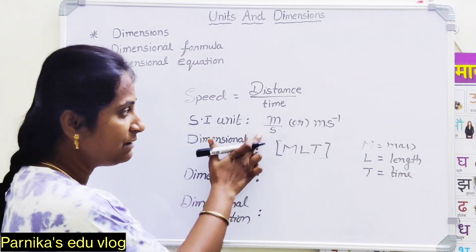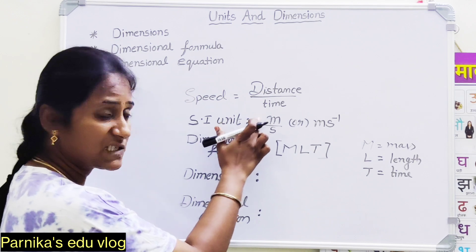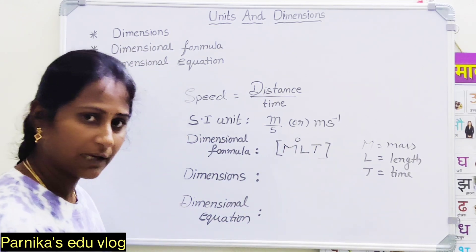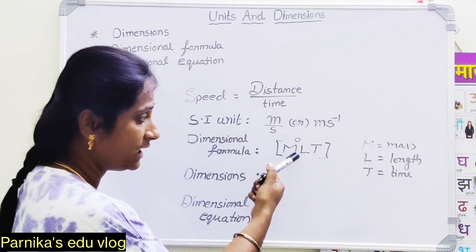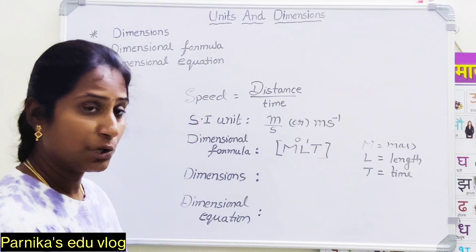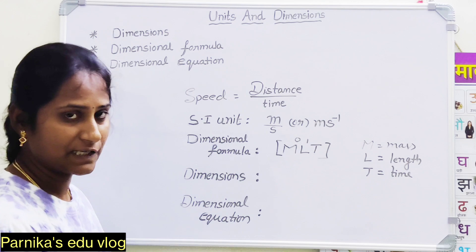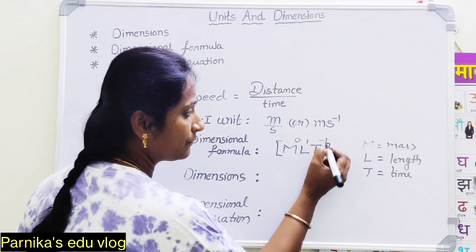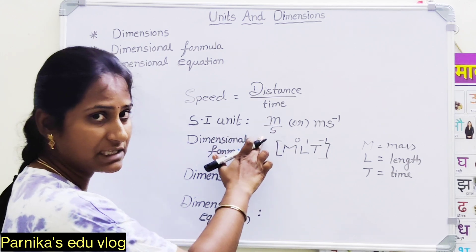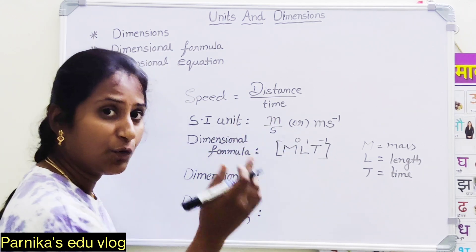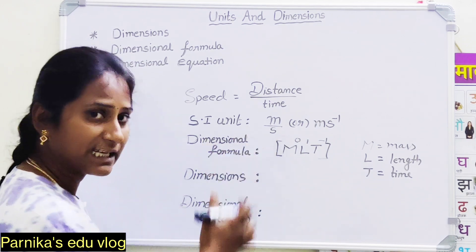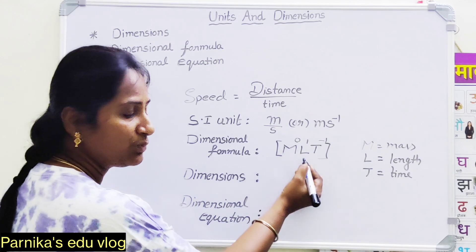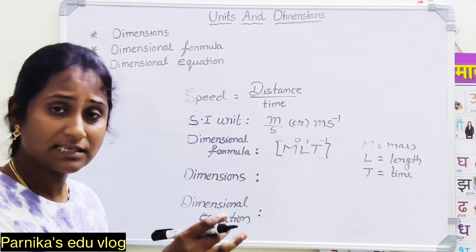First write [M L T]. Is there any mass? Mass has the unit kg. There is no kg in the unit of speed, so M has power zero. Is length there? Yes — the unit meter is there, so L has power one. Is time there? Yes — second is the SI unit of time, and it is in the denominator. When it comes to the numerator, it becomes minus one. So we have M⁰ L¹ T⁻¹. This is the dimensional formula for speed.